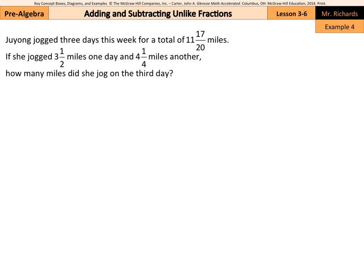Juyong jogged three days this week for a total of eleven and seventeen twentieths miles. If she jogged three and one-half miles one day, and four and one-fourth miles another, how many miles did she jog on the third day? Well, basically, if we kind of set up an equation here, three and one-half the first day, plus four and one-fourth the second day, plus whatever she did on the third day, it could be x, is going to equal eleven and seventeen twentieths.